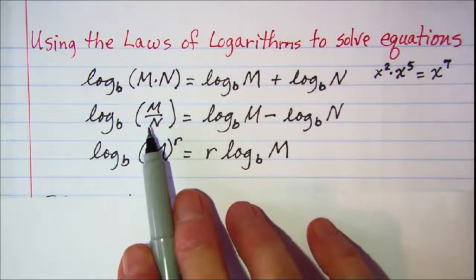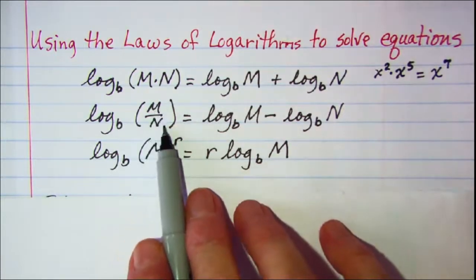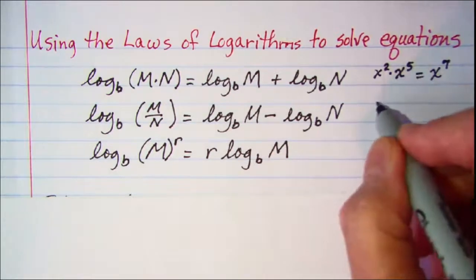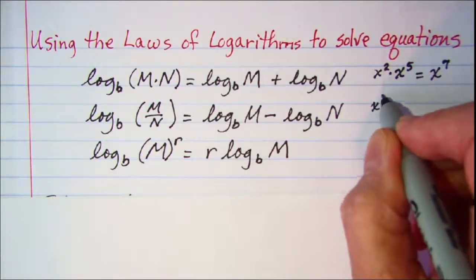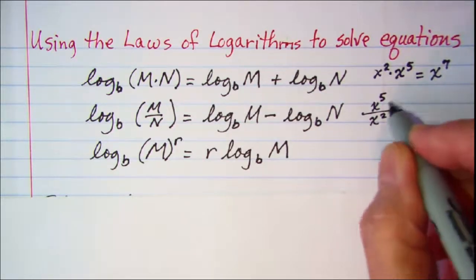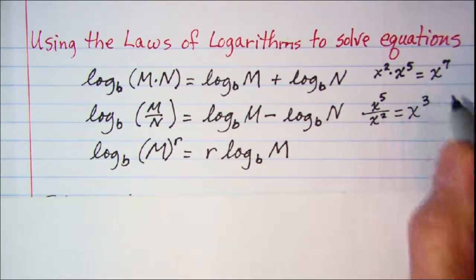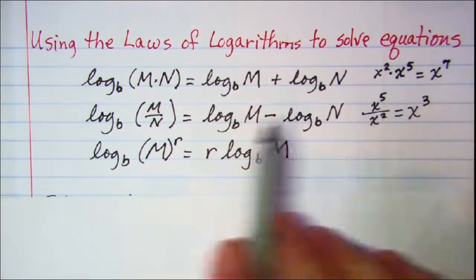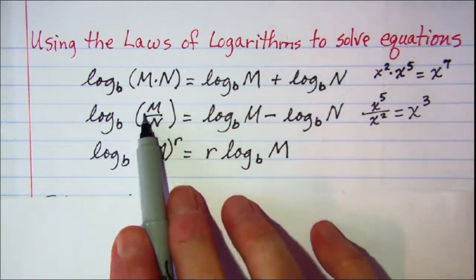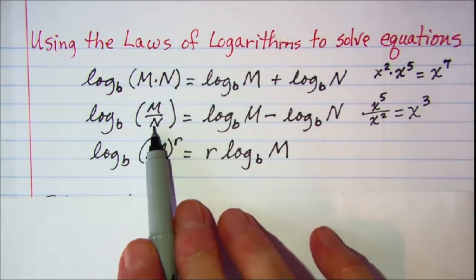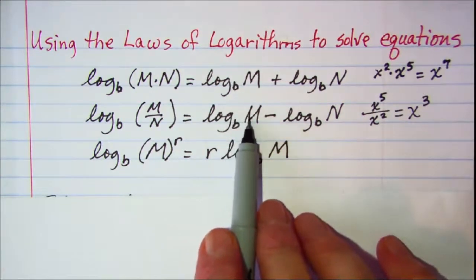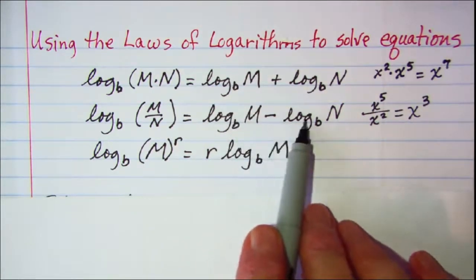The second law of logarithms says that the log of a quotient is equal to the difference of the logs. We get that from: x to the fifth divided by x squared equals x to the third, which is the difference of those exponents. So the log of an argument that is a quotient can be rewritten as the difference of the log of the numerator and the log of the denominator.